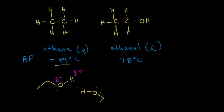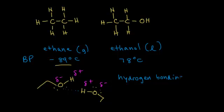So we give the oxygen a partial negative charge and the hydrogen a partial positive charge. The same is true for the other ethanol molecule — partially negative oxygen, partially positive hydrogen. Opposite charges attract, so the partially positive hydrogen is attracted to the partially negative oxygen. There's a strong intermolecular force holding those two molecules together, and that is hydrogen bonding. Since hydrogen bonding is the strongest intermolecular force, it's relatively difficult to pull those molecules apart — it takes a lot of energy and heat, which is why the boiling point of ethanol is so much higher than that of ethane.